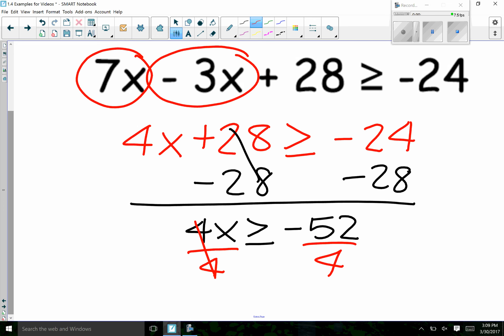So if we have negative 52 divided by 4, x is greater than or equal to negative 13.